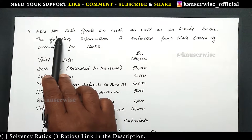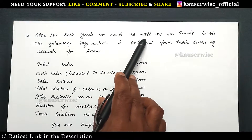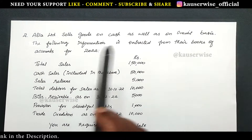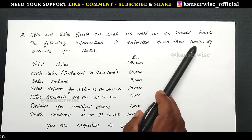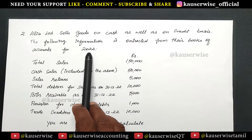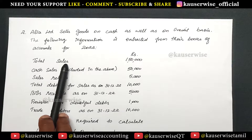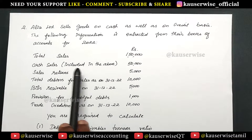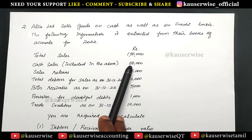Alice Limited sells goods on cash as well as on credit basis. The following information is extracted from their books of accounts for the year 2022. Total sales: 1,50,000. Cash sales included in the above: 50,000.